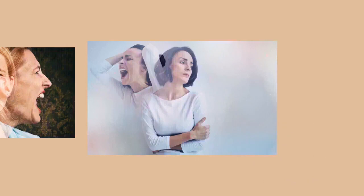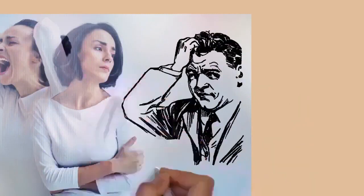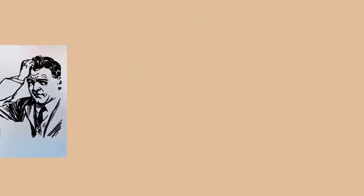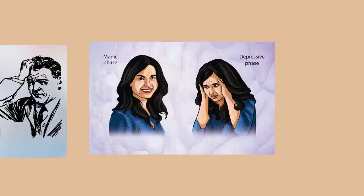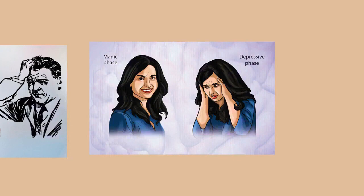People with bipolar disorder often have other coexisting psychiatric conditions such as anxiety, present in about 71% of people with bipolar disorder; substance abuse, 56%; personality disorders, 36%; and attention deficit hyperactivity disorder, 10-20%, which can add to the burden of illness and worsen the prognosis. Certain medical conditions are also more common, including metabolic syndrome in 37%, migraine headaches in 35%, obesity in 21%, and type 2 diabetes in 14%. This contributes to a risk of death that is two times higher in those with bipolar disorder compared to the general population. Substance use disorder is a common comorbidity in bipolar disorder.